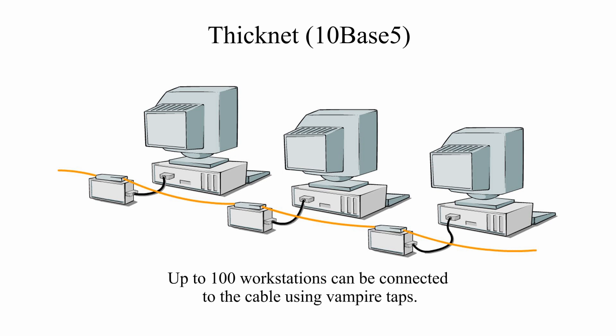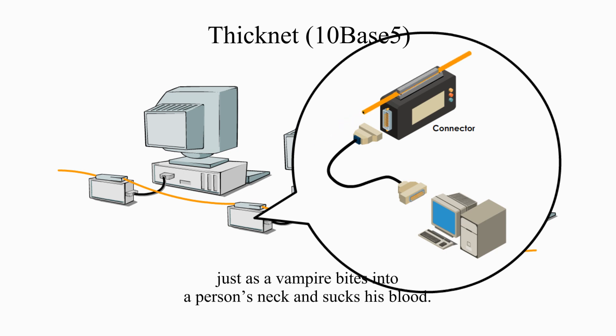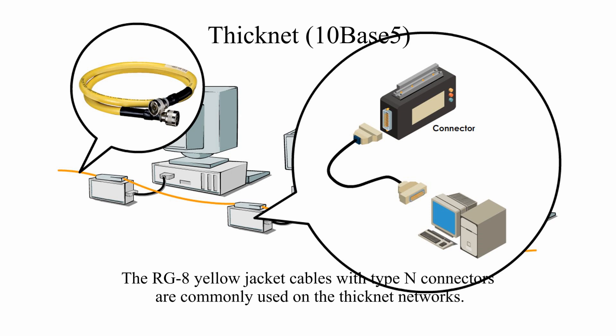Up to 100 workstations can be connected to the cable using vampire taps. A vampire tap, also called a piercing tap, clamps onto and bites into the cable, just as a vampire bites into a person's neck. The device allows new connections to be made on a cable while the cable is still in use. The RG8 yellow jacket cables with Type-N connectors are commonly used on Thicknet networks.